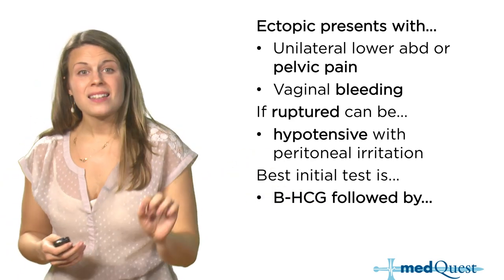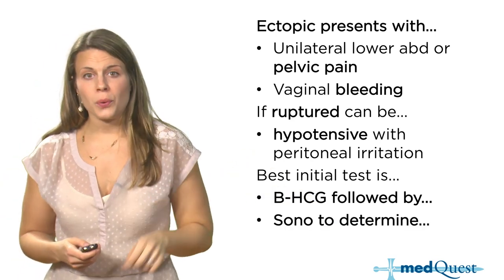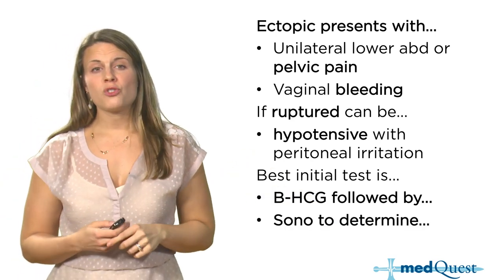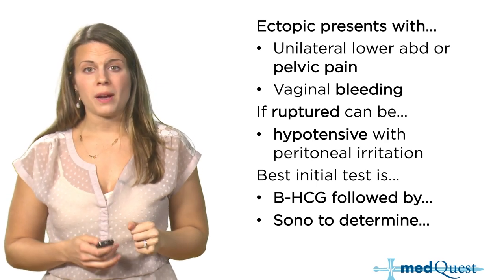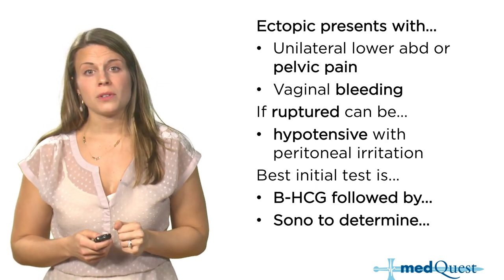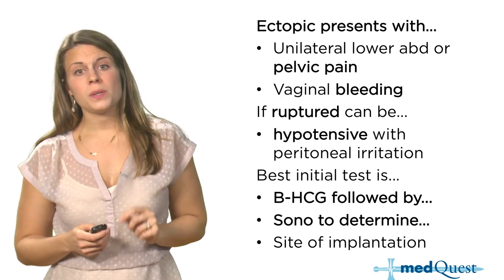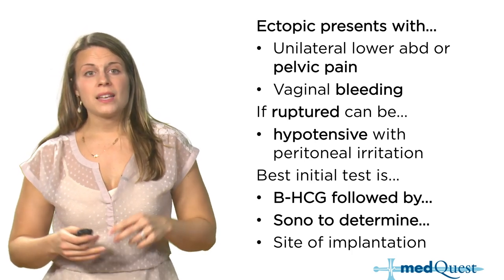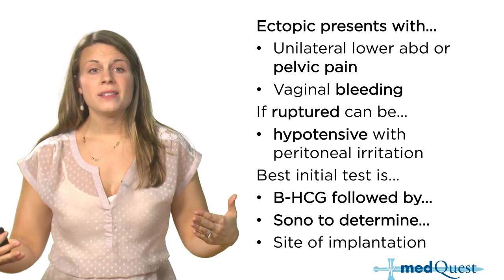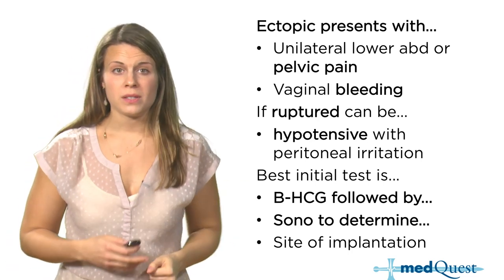The diagnostic test for ectopic pregnancy is a sonogram — typically a transvaginal sonogram, which gives better visualization of a pregnancy this early on. The sonogram will tell you the site of implantation, confirming the pregnancy is outside the uterus and showing exactly where it has implanted.